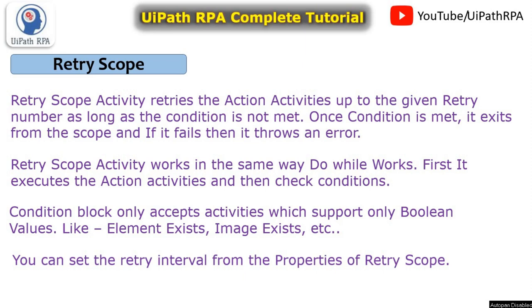Sometimes we face a scenario where we need to check for an existing image - if we are getting this image, then we need to exit from that scope or sequence. If it is available, then we need to go to the next step. If it is not there, then we need to retry because we need to fulfill that requirement.